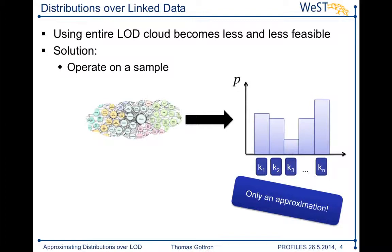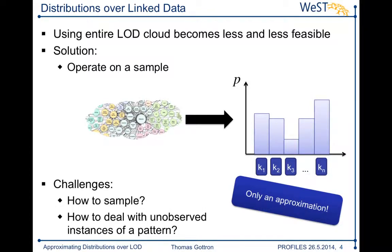There are two things you can influence when working with these samples, and these are exactly the two things I examine in this paper. One is the question of how to perform sampling. The second is how to deal with unobserved events, because if I am taking just a fragment of the linked data cloud, I might not have observed all the patterns out there — I might have missed some predicates or combinations of RDF class types — and still I want to assign them some probability.